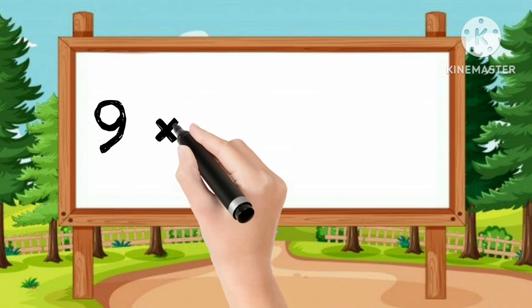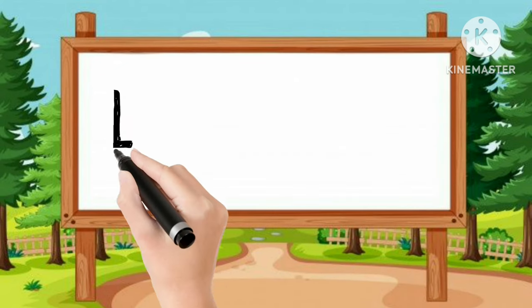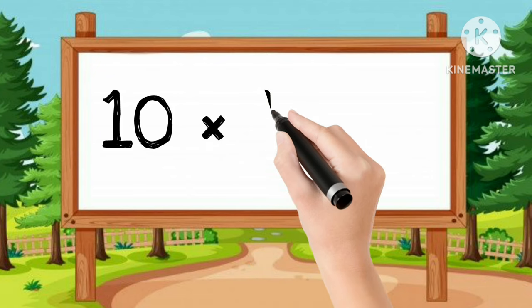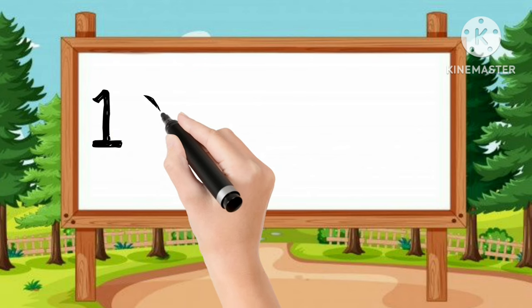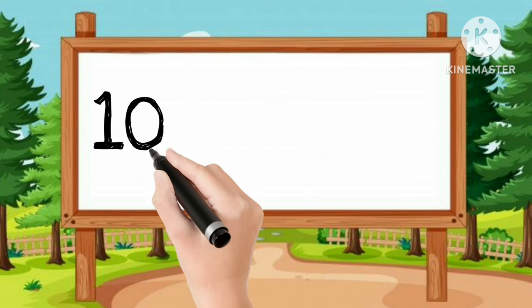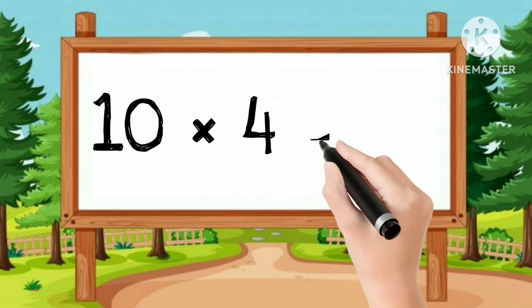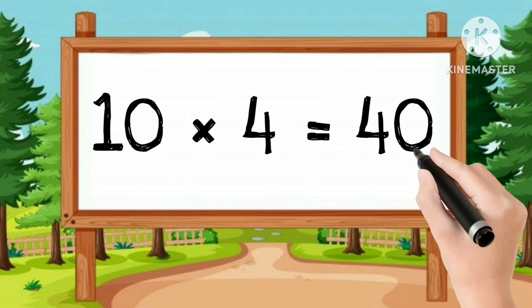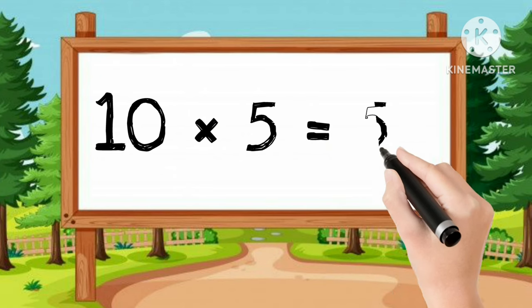9-10s are 90. Let's learn table of 10. 10-1s are 10. 10-2s are 20. 10-3s are 30. 10-4s are 40. 10-5s are 50.